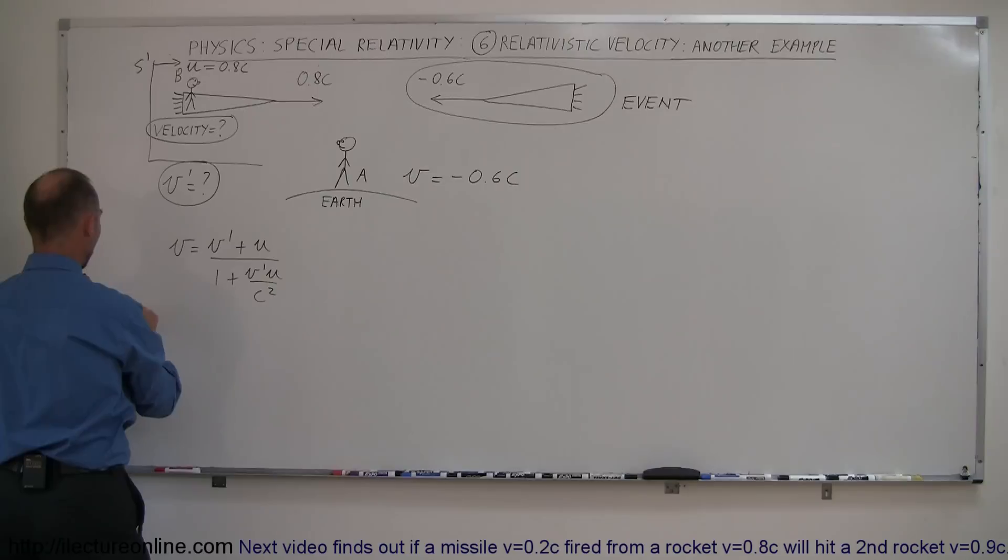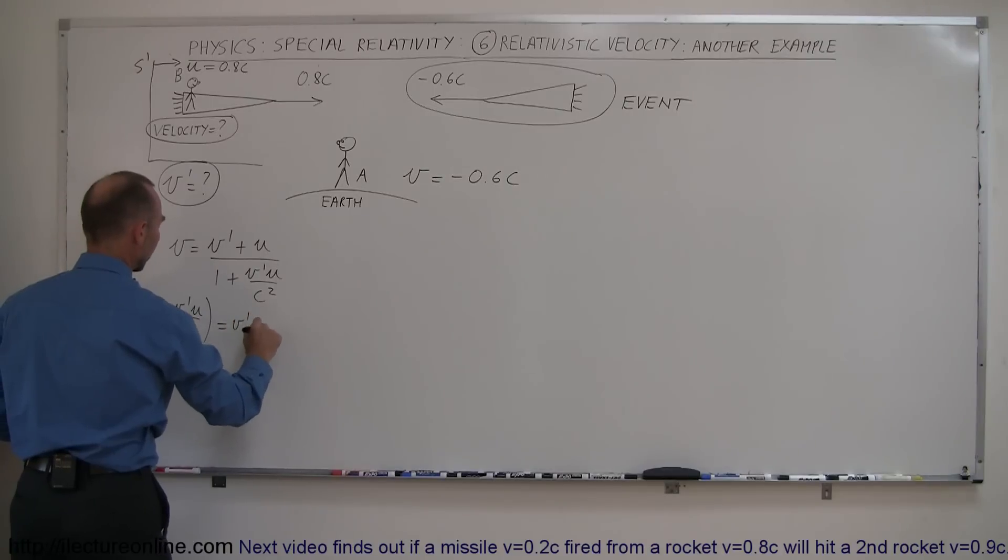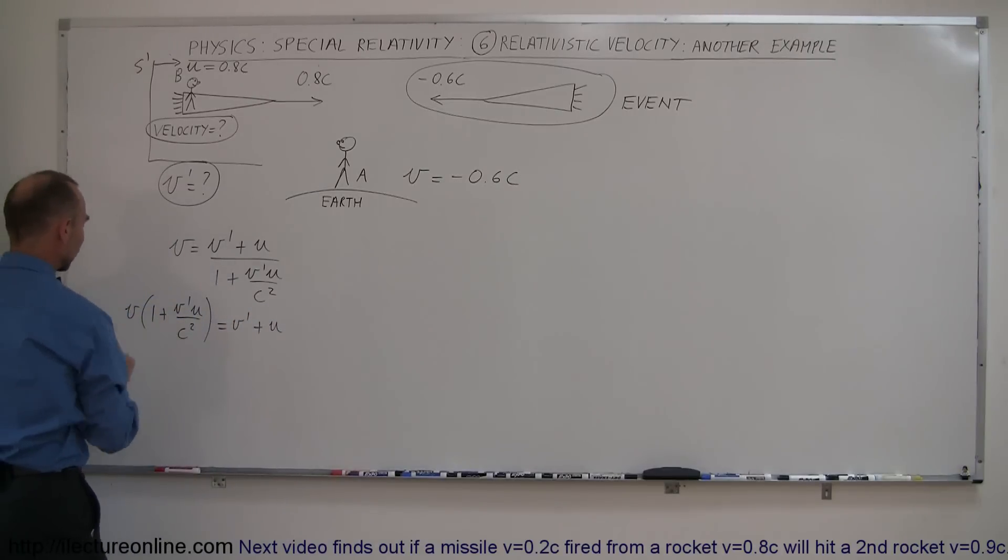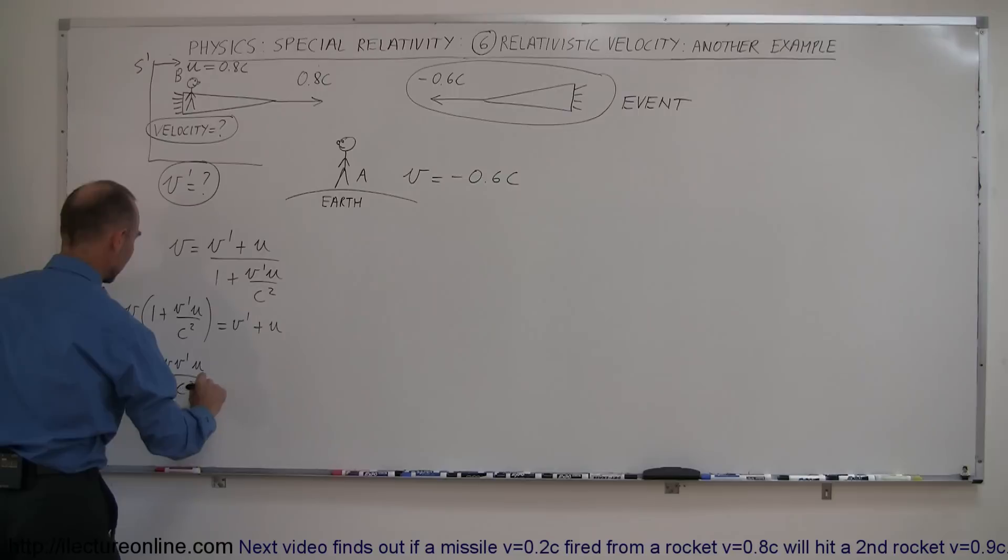Let's move this to the other side. So we have V times 1 plus V'U over C squared is equal to V' plus U. Then multiplying this through, we get V plus VV'U over C squared is equal to V' plus U.